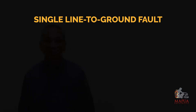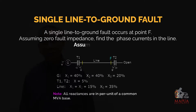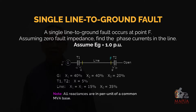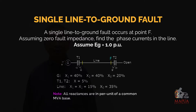This is an example of a single line to ground fault wherein there is a fault at point F. In the diagram we have one generator, two transformers, and a transmission line. The fault point is located at the end of the transmission line connected to the Y-grounded side of transformer T2. Assuming zero fault impedance, find the phase currents in the line assuming the voltage at the generator is equal to 1.0 per unit.